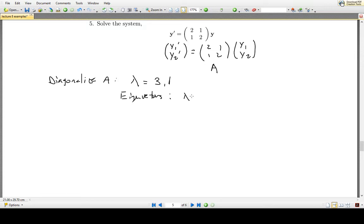And the corresponding eigenvectors are for lambda equals 3 the eigenvector is [1,1], and for lambda equals 1 the eigenvector is [-1,1].